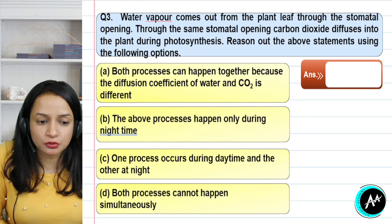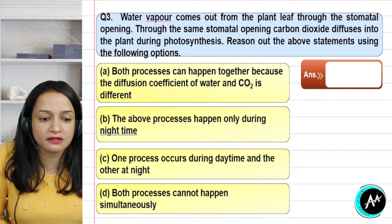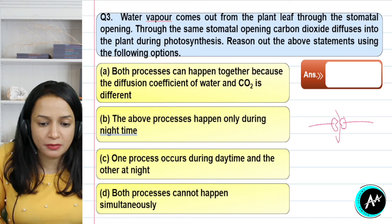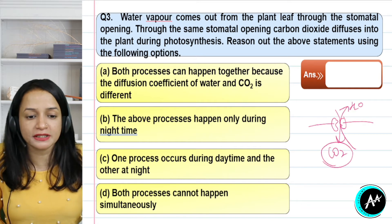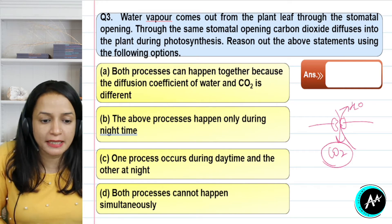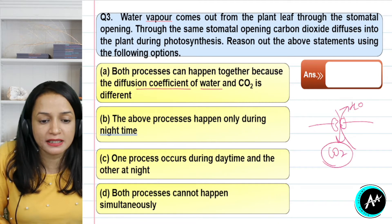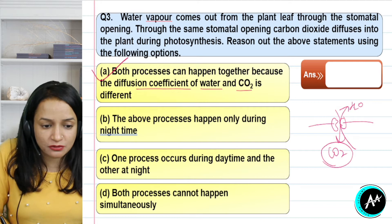Question 3: water vapor comes out from the plant leaf through the stomatal opening; through the same stomatal opening, carbon dioxide also diffuses into the plant during photosynthesis. Stomata are found on the upper and lower surface of the leaf. Water vapor exits through stomata during transpiration, and CO₂ enters through the same stomata for photosynthesis. Both processes run simultaneously. The first option states both processes can happen together because the diffusion coefficient of water and CO₂ is different, so there is no interference. The correct answer is option A.